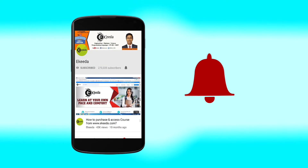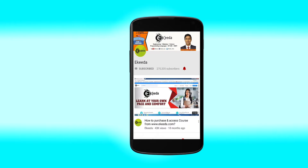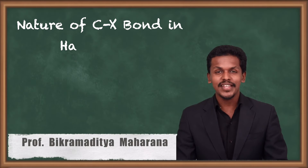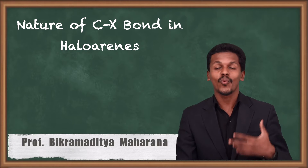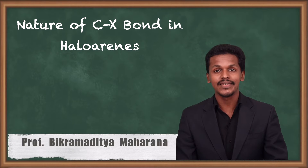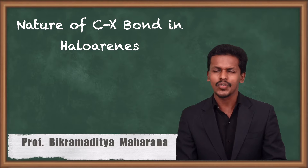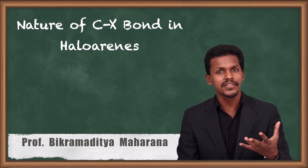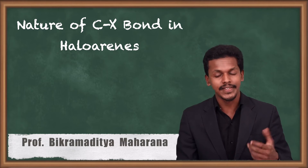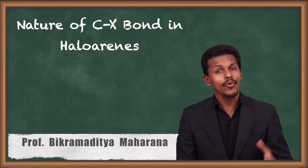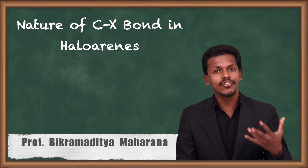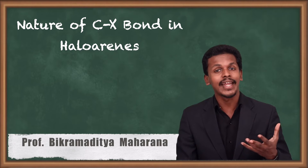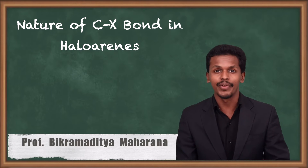Click the bell icon to get the latest videos from Ikeda. Hello friends, in the previous lecture we got to know about what haloarenes are, classified them, and gave IUPAC nomenclature to certain structures. Now we are going to talk about the nature of the bond between carbon and halogen in haloarenes.